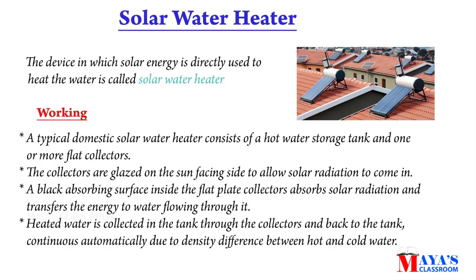A solar water heater is a device in which solar energy is directly used to heat water. A typical domestic solar water heater consists of a hot water storage tank and one or more flat plate collectors. The collectors are glazed on the sun-facing side to allow solar radiation to come in. A black absorbing surface inside the flat plate collectors absorbs solar radiation and transfers the energy to water flowing through it. Heated water is collected in the tank, with circulation occurring continuously due to the density difference between hot and cold water.